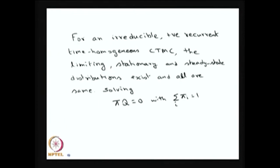For a time-homogeneous irreducible positive recurrent CTMC, the limiting distribution, stationary distribution, and steady state distribution all exist and are the same. One can solve the two equations — pi*Q = 0 and summation of pi_i = 1 — to obtain the limiting, stationary, or steady state (equilibrium) distribution.